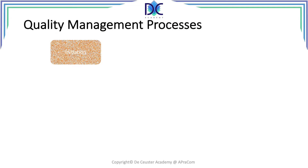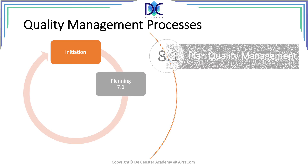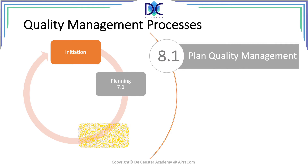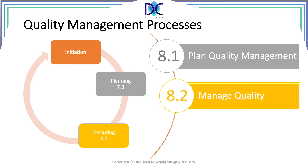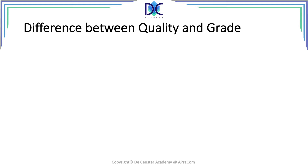When we look at the quality management processes, we look first at initiation — in initiation there is no quality management process. Then we have planning: plan quality management. Then in execution we have manage quality, and in monitoring and control we have control quality. Basically these are the three processes that are linked to the project management process.